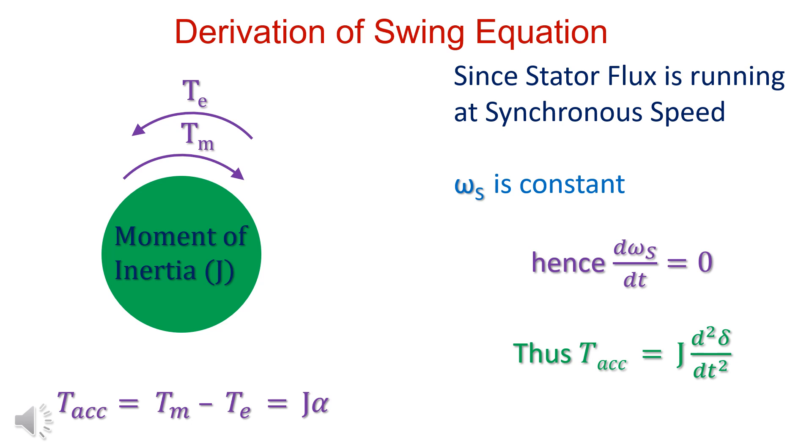Omega s is constant. Hence, d omega s by dt is equal to zero. Thus, accelerating torque equals j d square delta by dt square.